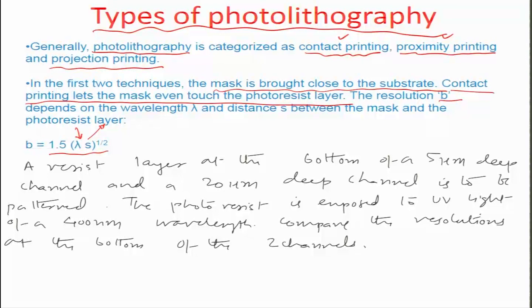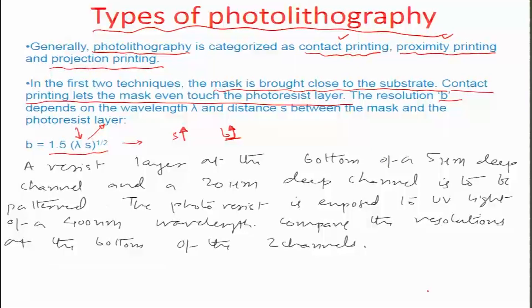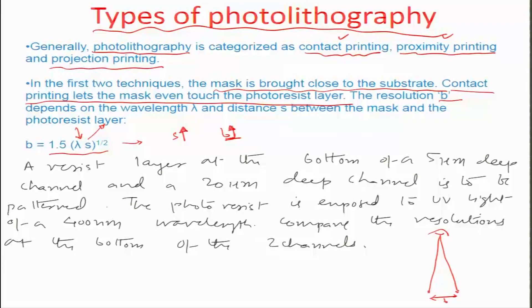If the resist distance S is changed, the resolution will definitely change. For example, if S — the distance between the mask and the resist layer — goes up, then B also goes up, meaning lower resolution. B is typically the minimum distance between two different objects that can be visualized independently. So if B reduces, the points become merged into one another and may not be independently visualized.